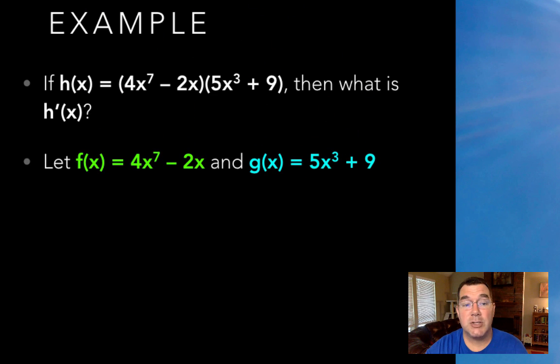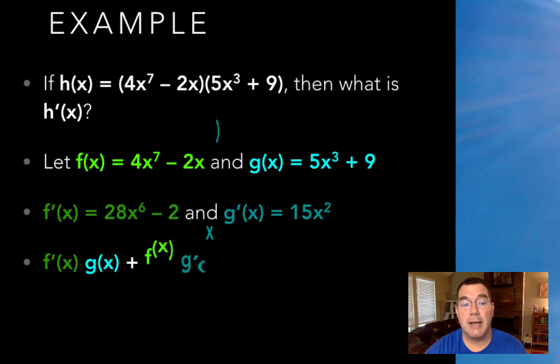So f of x is going to be that first function, and then g of x is going to be the second function. So the derivative of the f function is going to be 28 times x to the 6 minus 2, and the derivative of the second function is just going to be 15x squared. So now I can plug them into that formula.